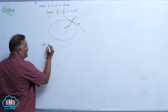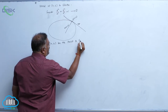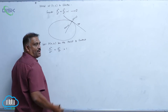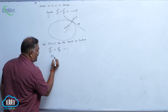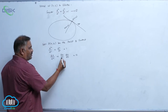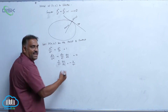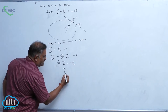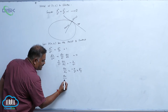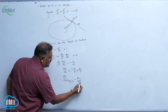Let P(x₁, y₁) be the point of contact. Starting from x² / a² + y² / b² = 1, differentiate to get 2x / a² + (2y / b²)(dy/dx) = 0. The 2's cancel, giving y / b² · dy/dx = −x / a². So dy/dx = −(b²x) / (a²y). At the point (x₁, y₁), dy/dx = −b²x₁ / (a²y₁).